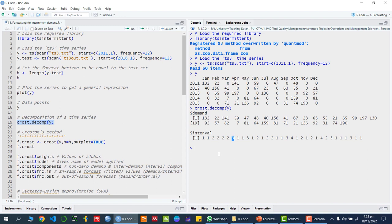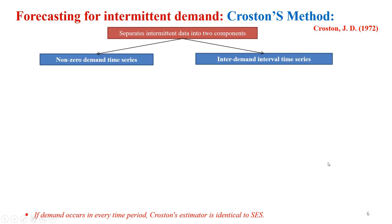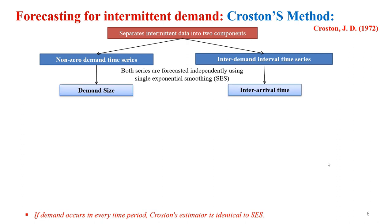So that is how we decompose this time series into the demand size and the interval size. You can see the corresponding values here. After this we have values like 0, 1, 3 — the 3 is against 31, and against 74 we have 1, and against 190 we have 1. Where there is a zero, there is no interval because there is no non-zero demand. I hope you understand how to separate the non-zero demand time series from the inter-demand interval time series.